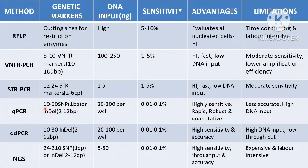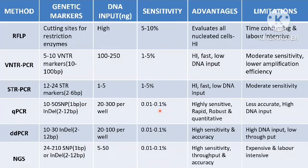For qPCR, we use 10 to 50 SNPs of 1 base pair size or indels. The genetic markers used are indels ranging from 2 to 12 base pairs. Input DNA per well is 20 to 300 nanograms and the sensitivity is 0.01 to 0.1 percent. It is highly sensitive, rapid, robust, and quantitative. However, it is less accurate and requires high DNA input.